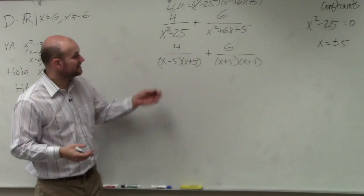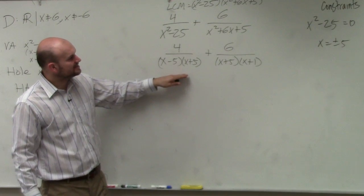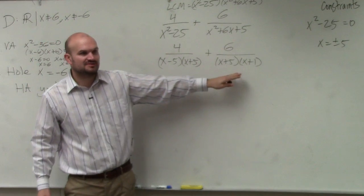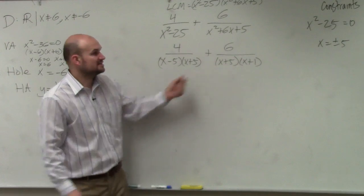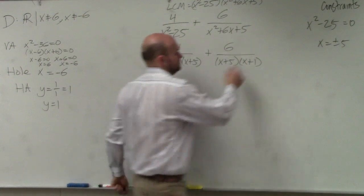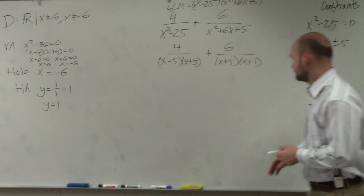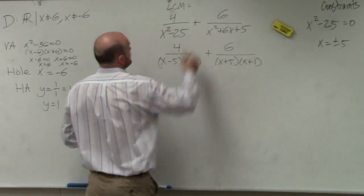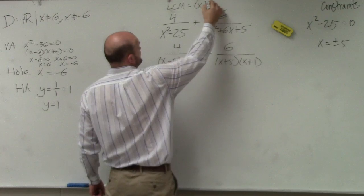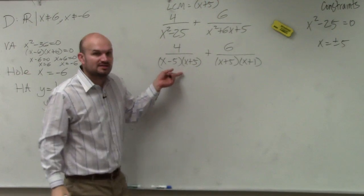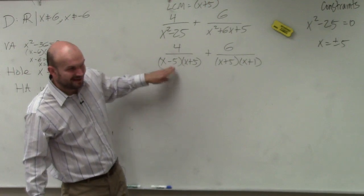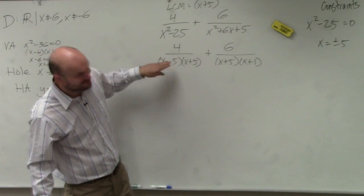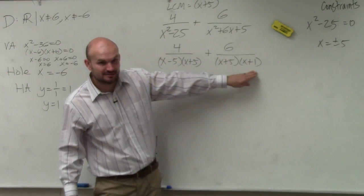So now, if you guys look at the LCM, you can see that they both already share an x plus 5, right? So the LCM has to contain x plus 5. And then what else does that have to contain? An x minus 5 and x plus 1.